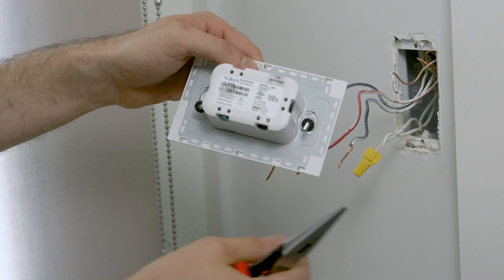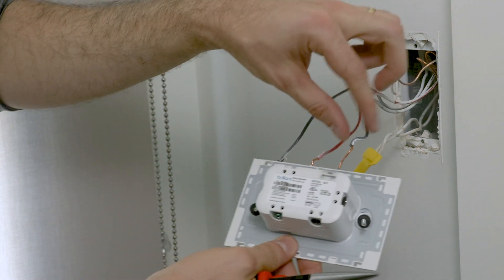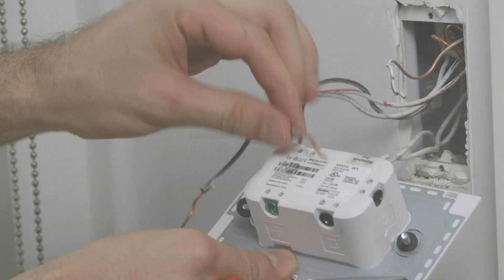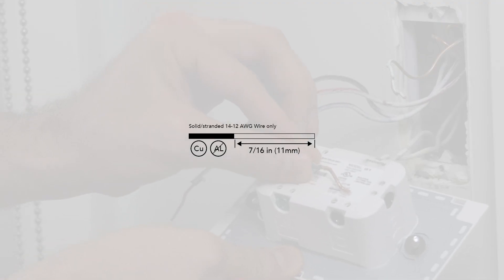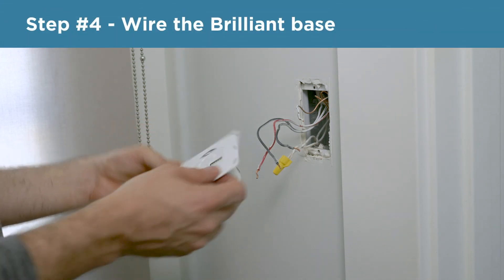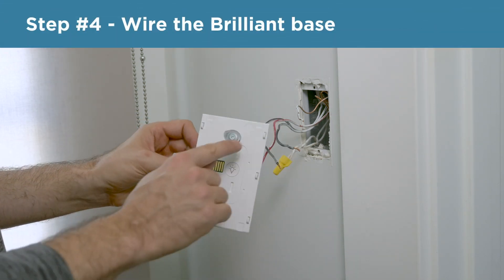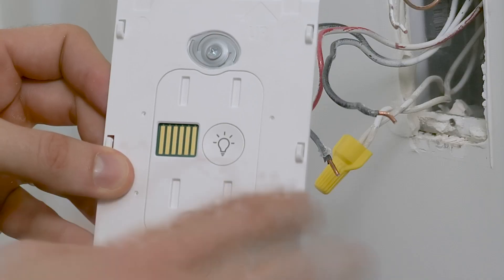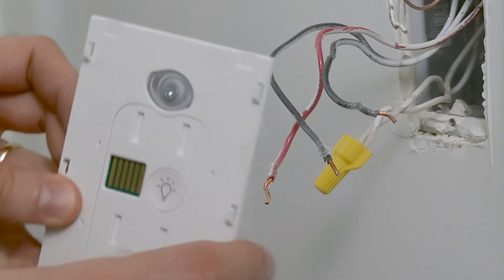Next, I want to take the exposed wires and make sure they are not too long so as to prevent potential shorts. The Brilliant Base has a great diagram to check the length while trimming. I can now start wiring the Brilliant Base. You always want to make sure your Brilliant is facing up when installing. The light bulb in the front should be facing up.